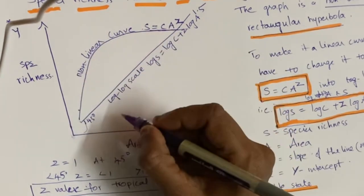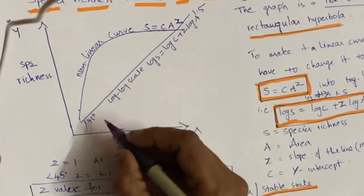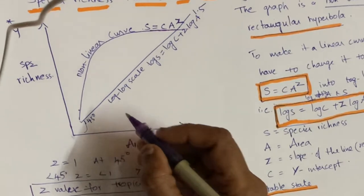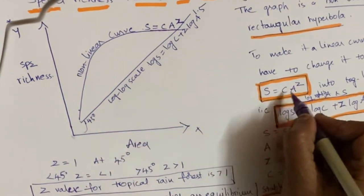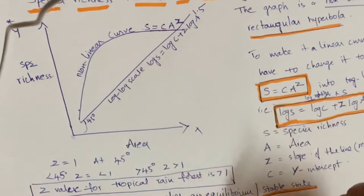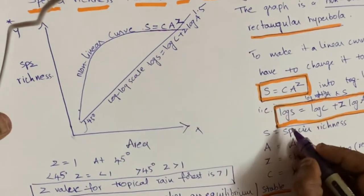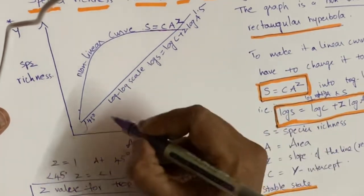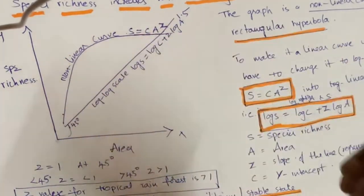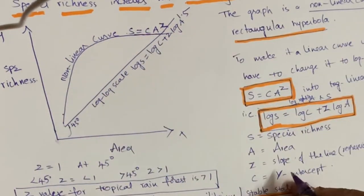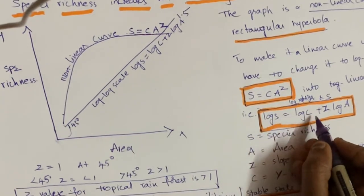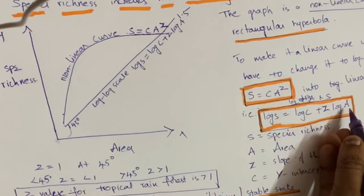To make the values easier to interpret, since the curve is nonlinear, we convert it to a linear one using a log scale — called the log-log scale. When we apply the log on either side of the equation, the rectangular hyperbola becomes a straight line, and the equation becomes: log S = log C + z log A.